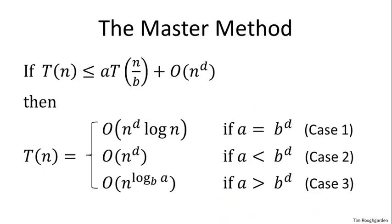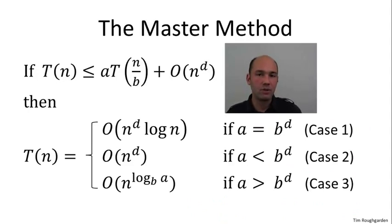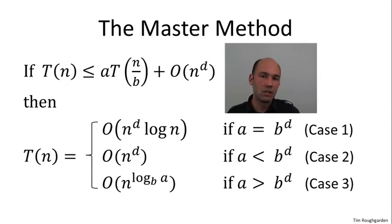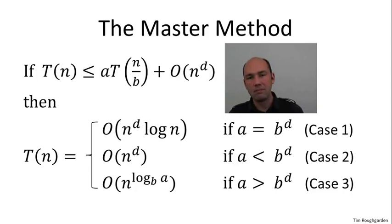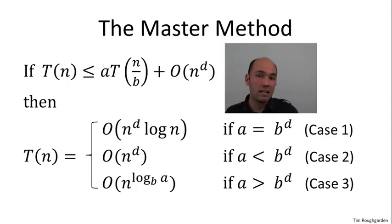Let's sanity check this intuition against the formal statement of the master method, which we'll prove more formally in the next video. In the three cases we see they match at least two out of three with our intuition. Case one gives the expected N to the D times log N. Case two, where the root is worst, gives big O of N to the D. The third case remains a mystery: instead of simply the number of leaves, we get the formula big O of N to the log base B of A. In the next video, we'll demystify that connection and provide a formal proof for these assertions.